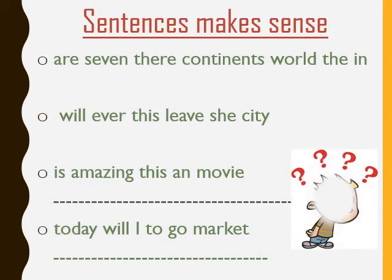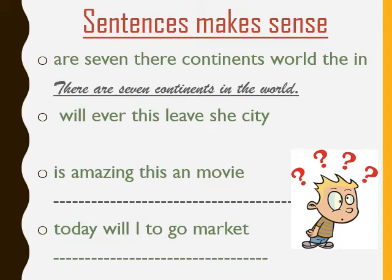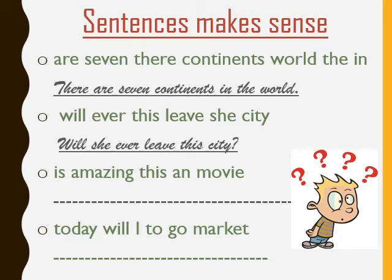Now that we know sentences are those which make sense, let's rearrange the given set of words that do not make sense. Let's try the first one: 'Are seven their continents world the in?' The answer is: There are seven continents in the world. Let's try another: 'Will ever this leave she city?' The answer is: Will she ever leave this city? Now, kids, tickle your brain and try to find the answers for another two sets.